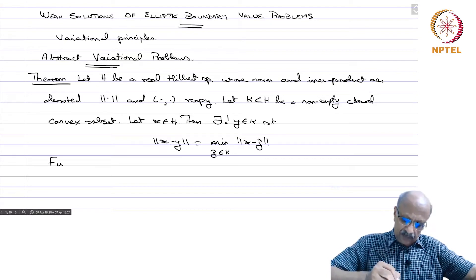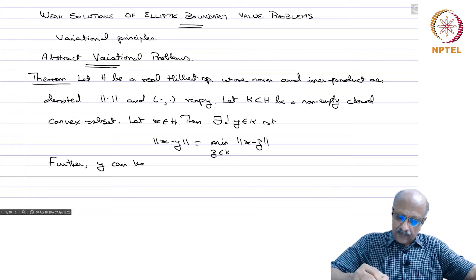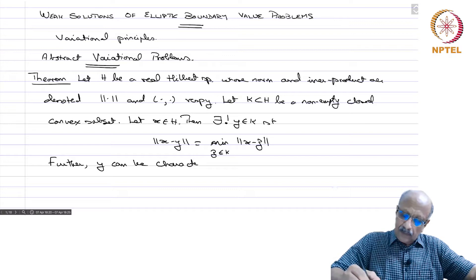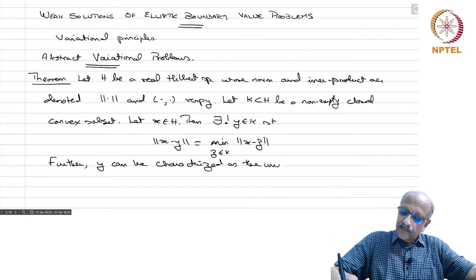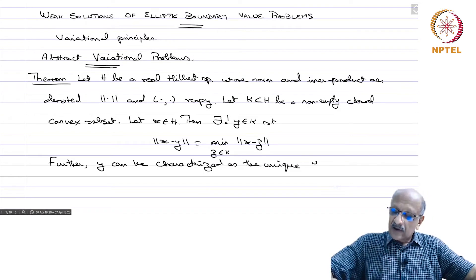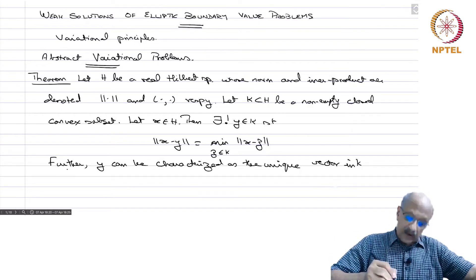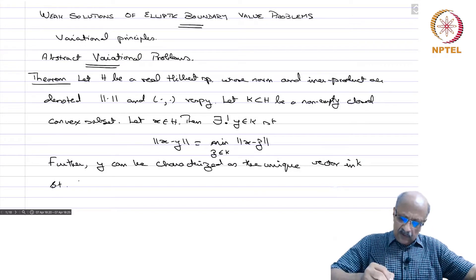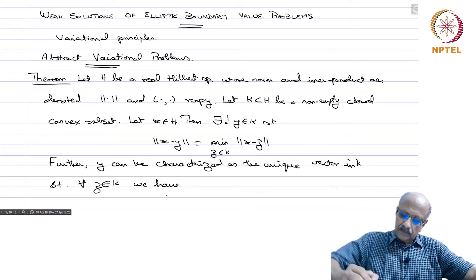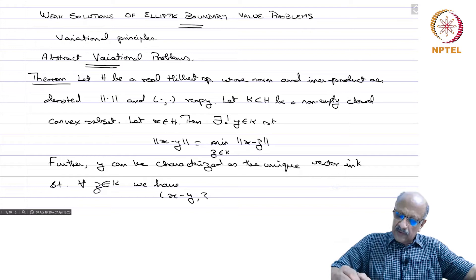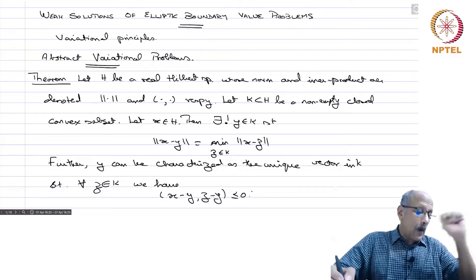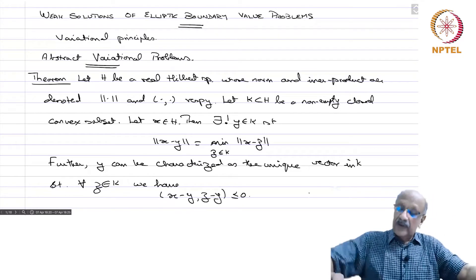Further, y can be characterized as the unique vector in K such that for all z in K, we have the inner product of x minus y with z minus y less than or equal to zero. This is the theorem.